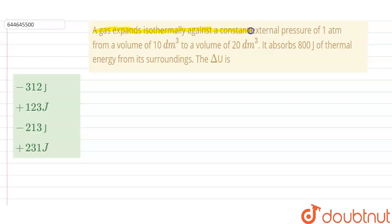Hello, so our question is: a gas expands isothermally against a constant external pressure of 1 atm from a volume of 10 decimetre cube to a volume of 20 decimetre cube, and during expansion it absorbs 80 joule of thermal energy from its surrounding.